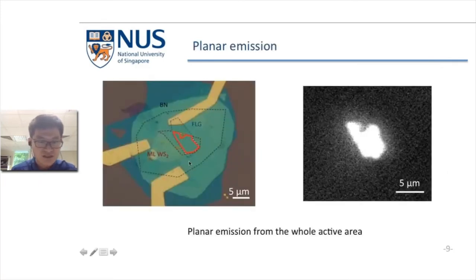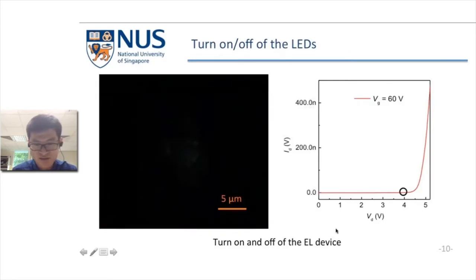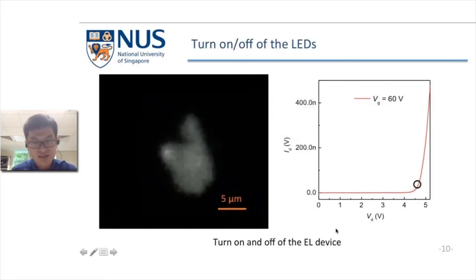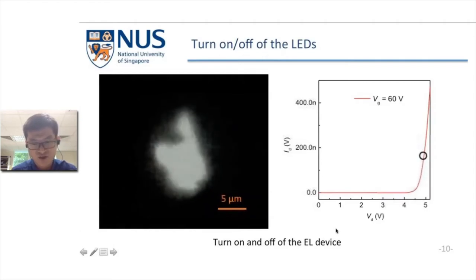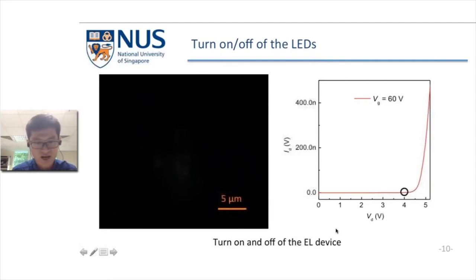This picture shows one of our devices. The red line is the overlapped area. We can see the emission is planar from the right image. I'd like to show a video to show that the LED can be turned on and off by controlled bias. At the current level of 100 nanoamperes, the device can achieve quite high brightness.